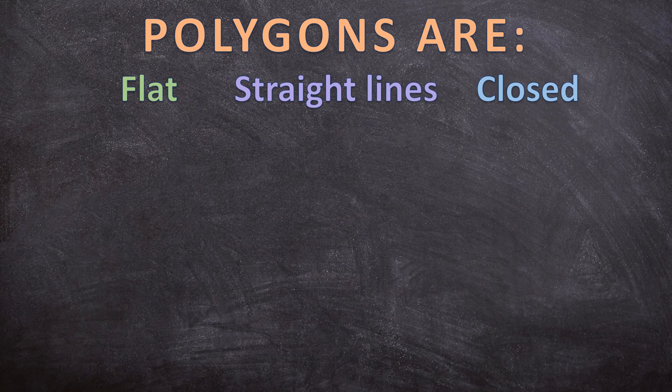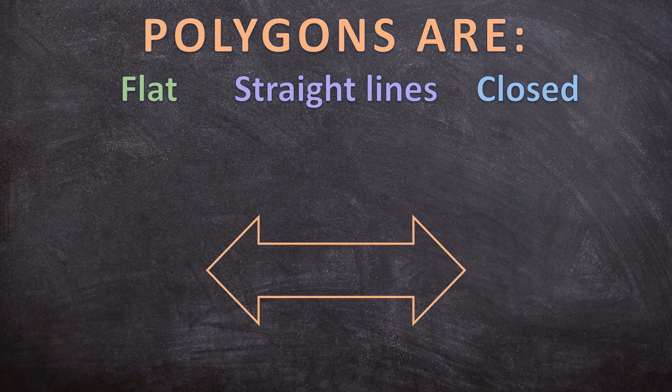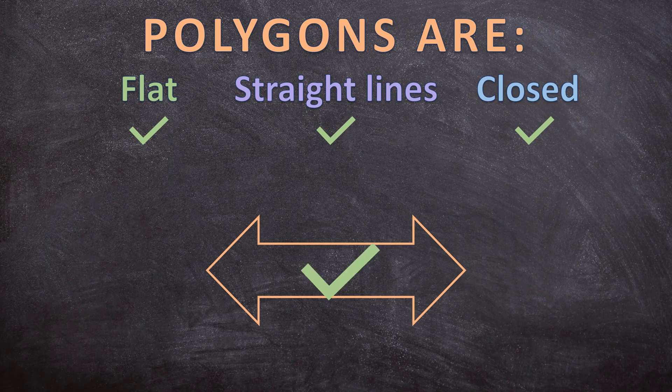And for our second last shape, let's have a look. Is this a flat shape? Yes, it is. Does it consist out of only straight lines? Yes, it does. And is it a closed shape? Yes, it is a closed shape. So this is a polygon.